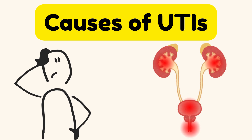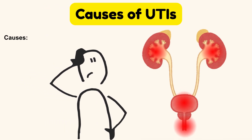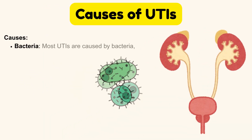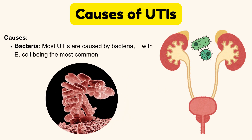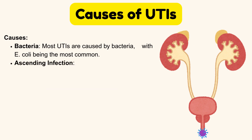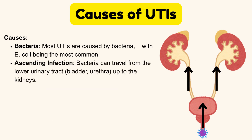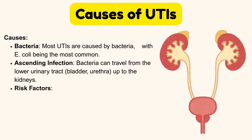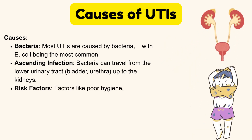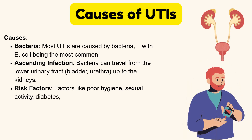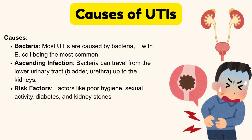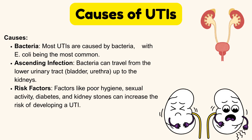What are the causes of UTIs? It has the following causes. First, bacteria — most UTIs are caused by bacteria, with Escherichia coli being the most common. Second, ascending infection — bacteria can travel from the lower urinary tract, bladder, and urethra, up to the kidneys. Third, risk factors — factors like poor hygiene, sexual activity, diabetes, and kidney stones can increase the risk of developing a UTI.